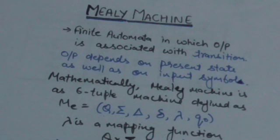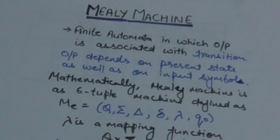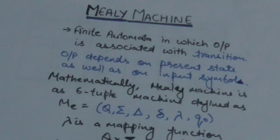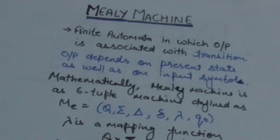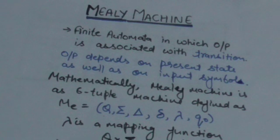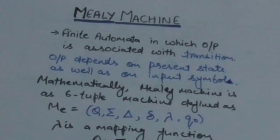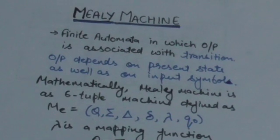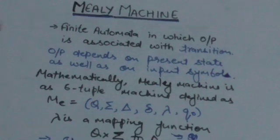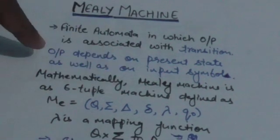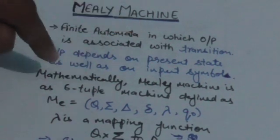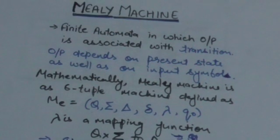Welcome back to tutorials. Our next topic is the Mealy machine. A Mealy machine is a finite automaton which gives output. It is also like a Moore machine, but in a Moore machine the output depends on the present state, whereas here the output depends on the present state as well as on the current input symbol.